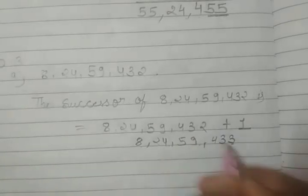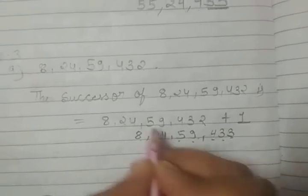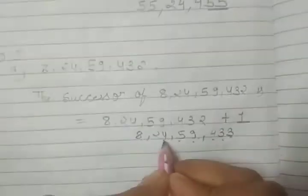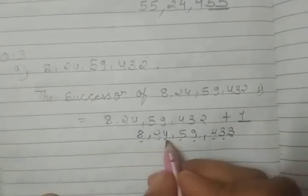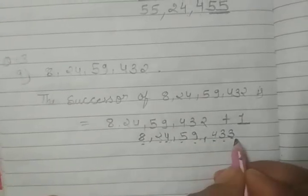The successor of 8,24,59,432 is obtained by adding 1. We get 8,24,59,433. We add 2 plus 1, giving us 3 in the ones place.